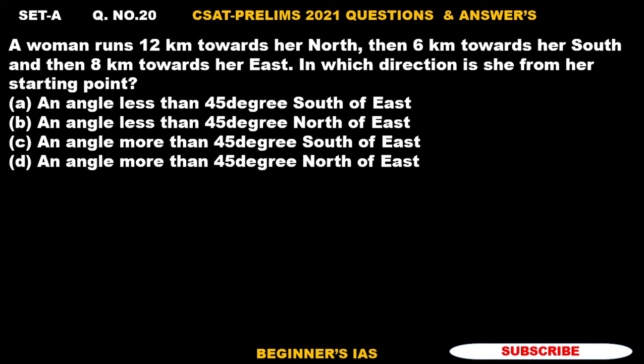Hello everyone, welcome. Let us discuss question number 20. A woman runs 12 kilometers towards north, then 6 kilometers towards south, then 8 kilometers towards east. In which direction is she from her starting point?